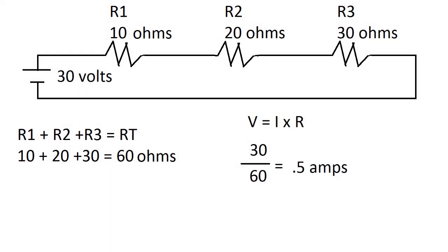Now recall that voltage equals current times resistance, or V equals I times R. So now we can rearrange that so it's V over R. We can take 30 volts over our total resistance of 60 ohms and we get 0.5 amps.